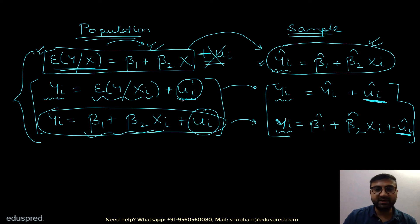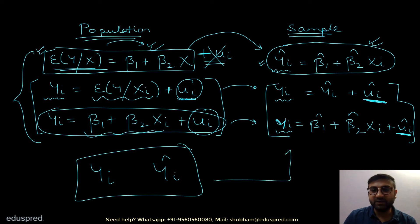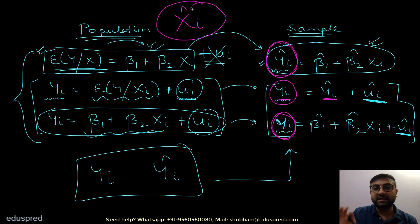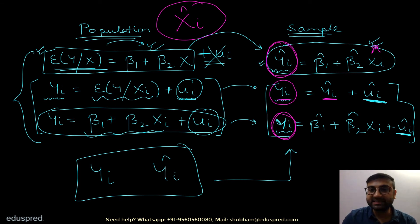Another thing to note is that you will see both yi and yi-hat in the sample equations, at different places. However, there is nothing called xi-hat in any of these equations. Some students mistakenly write yi-hat equals beta 1 hat plus beta 2 hat xi-hat. You do not apply a hat on x — x remains as it is. There is no such thing as xi-hat in these equations.